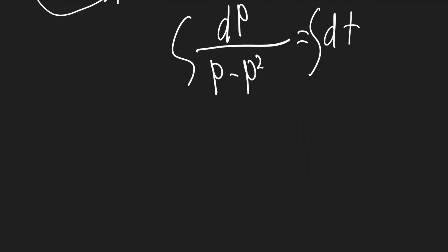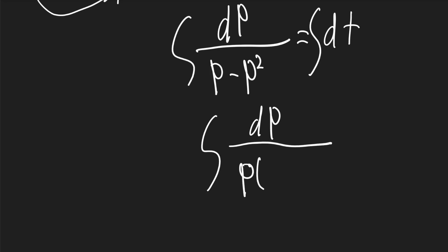On the left, one of the p's will factor out from the denominator, so it'll be p times (1 - p), and that'll be equal to the integral of dt.